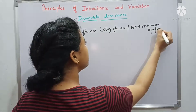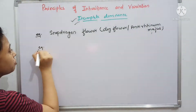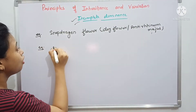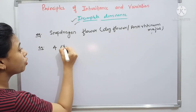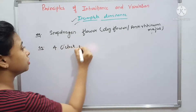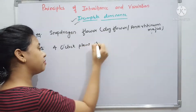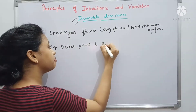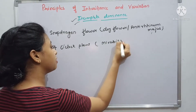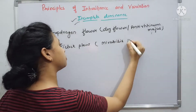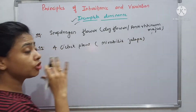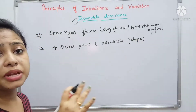There is another very famous example, which is the four o'clock plant. Its scientific name is Mirabilis jalapa.